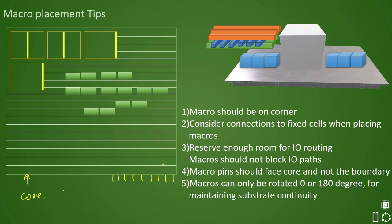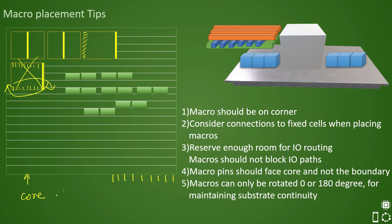The next rule was that macros can only be rotated 0 degrees or 180 degrees for maintaining substrate continuity. You cannot rotate a macro 90 degrees so that pins come on the top or bottom edges — that is not correct. Only 0 degree or 180 degree rotations are possible, and this is related to technology and foundry rules. Maintaining substrate continuity is very important.